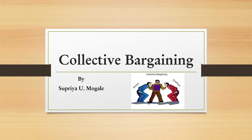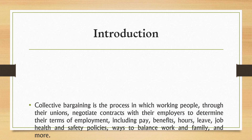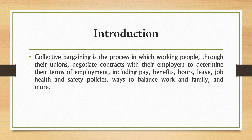Collective bargaining is one of the important parts of human resource management or industrial relations. It is the process in which working people through their unions negotiate contracts with their employers to determine their terms of employment, including pay, benefits, hours, leave, job health and safety policies, ways to balance work and family, and more. Organizations expect something from employees, and employees also have expectations from the organization.